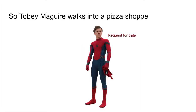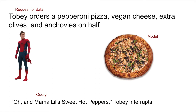Let's run through the analogy one last time with BRIC counterparts. Tobey Maguire is our request for data. Say you're on a widget and you want to render a list of users — every user in Alaska. This request, this order — pepperoni pizza, vegan cheese, extra olives, anchovies on half — the pizza itself is a model.